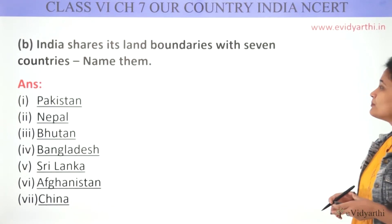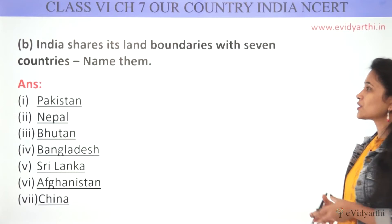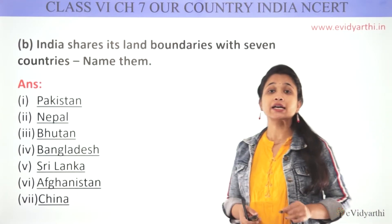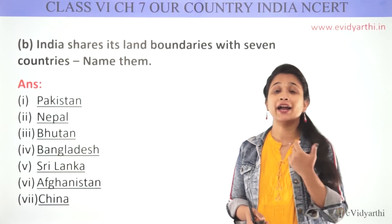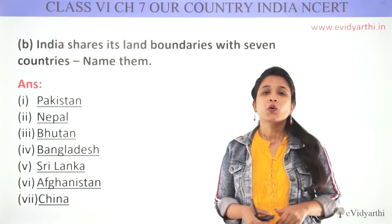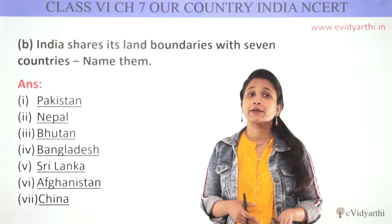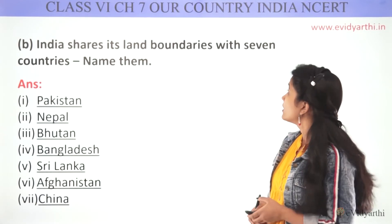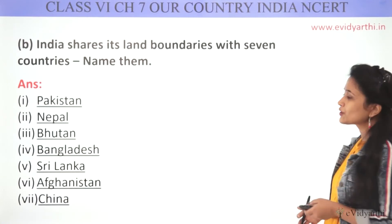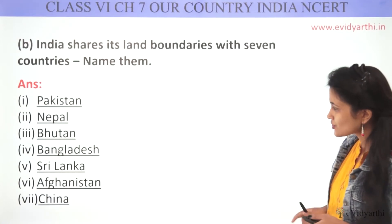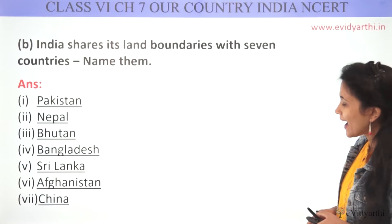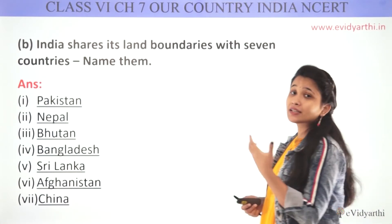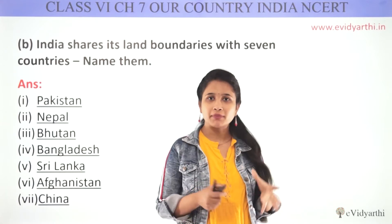The second question: India shares land boundaries with seven countries. Please name them. The seven countries are: Pakistan, Nepal, Bhutan, Bangladesh, Sri Lanka, Afghanistan, and China. These are the countries which India shares its boundaries with.